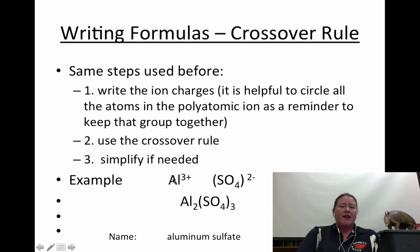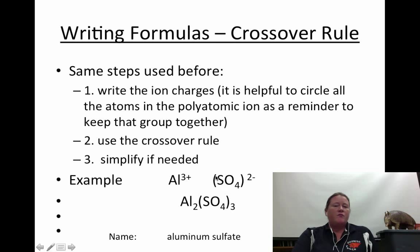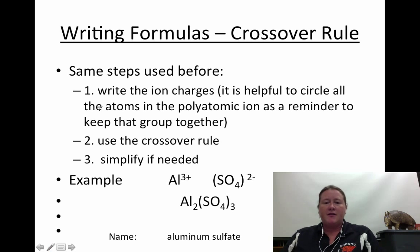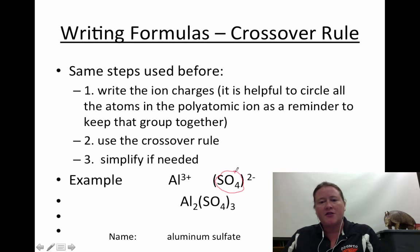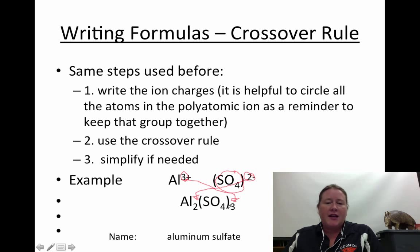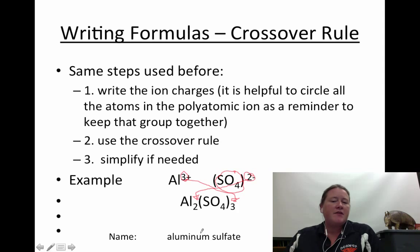We start with writing the ion charges first. Aluminum has a plus 3 charge, and sulfate has a negative 2 charge. I like to put polyatomic ions in parentheses — or physically circle them — as a reminder that this is a group of elements that stays together and carries the charge. When using the crossover rule, the negative 2 tells us how many aluminums we need, and the plus 3 tells us how many sulfates we need. Crossing over those charges, we have three sulfate groups with parentheses used. The name is simply aluminum sulfate.